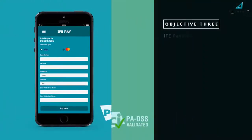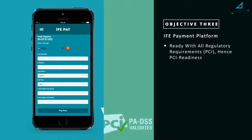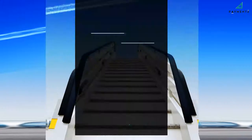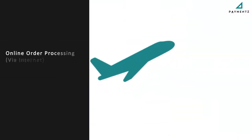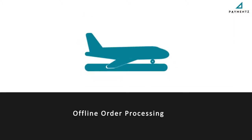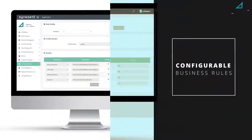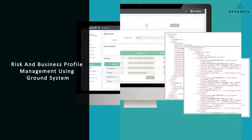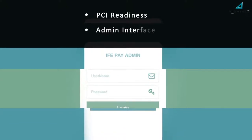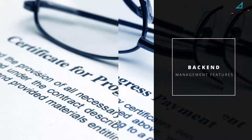Objective 3 — IFE payment platform ready with all regulatory requirements: PCI readiness. Overview of IFE Pay features includes online order processing via internet, offline order processing, in-flight risk analysis based on configured risk rules, configurable business rules, automated offline order processing via internet, risk and business profile management using the ground system, PCI readiness, and an admin interface. IFE Pay also comes with customized back-end management features to make it more effective and easy to manage payments from one single solution.